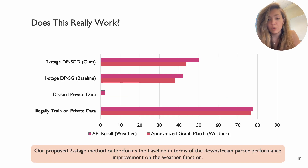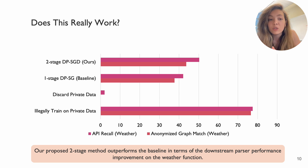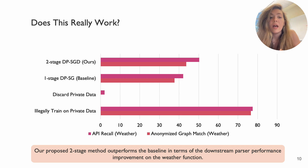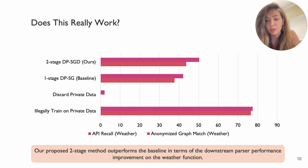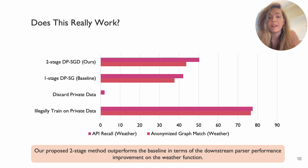Here we see the results for this experiment. In terms of API recall and actual graph match on weather-related queries, we see improvements. Actual graph match is zero if you're not augmenting your data. However, if we use our method or the baseline, we see improvement, and our method provides much stronger improvement over the baseline. So we can use the synthesized dataset — whether from the baseline or our method — to add new functionality, and we show it is distributionally better to use the proposed two-stage method.